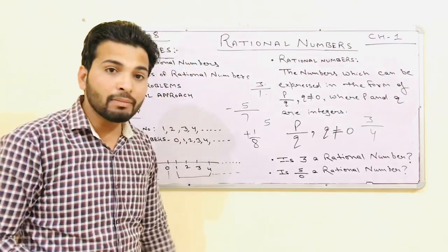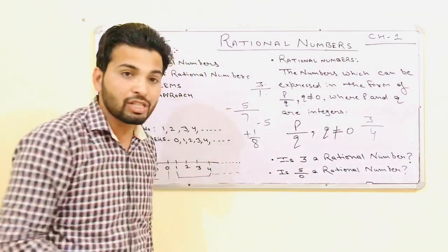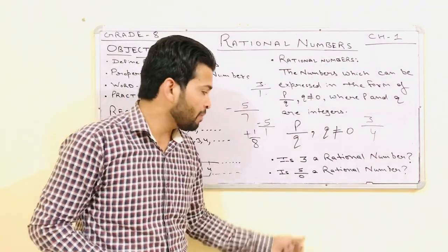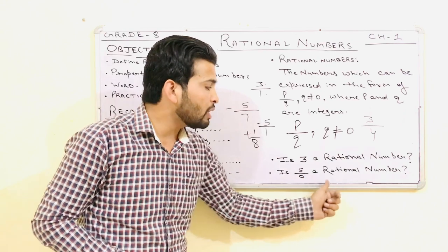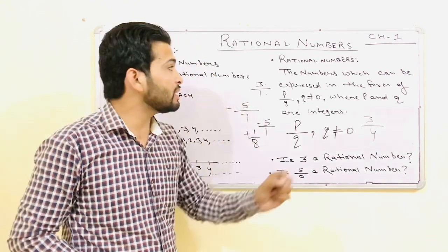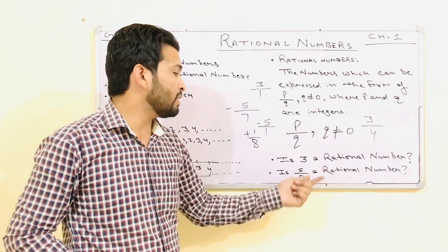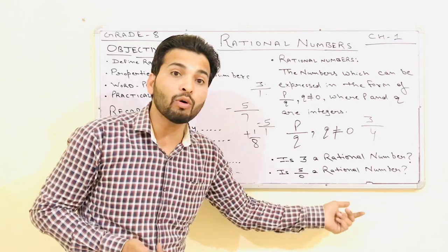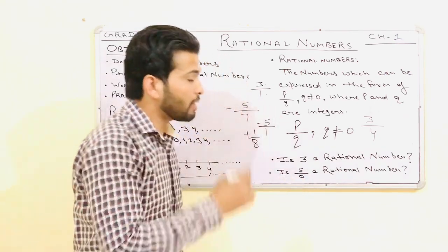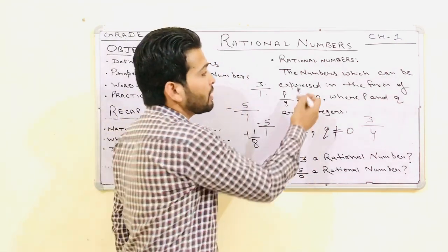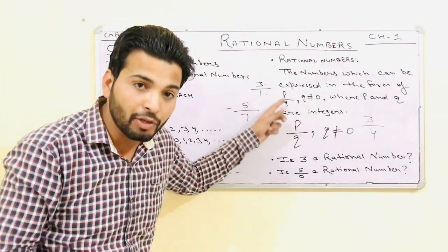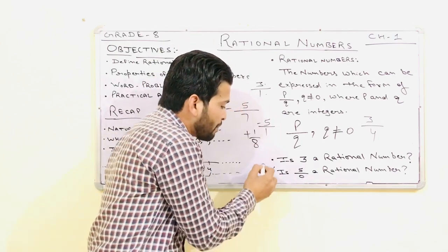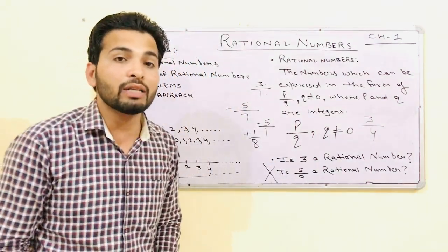Is 5 a rational number? Yes. Is minus 5 a rational number? Yes. My last question of this introduction: is 5 upon 0 a rational number? If you have learned the definition properly, you will answer in seconds. Obviously no — because Q is 0, and in the definition Q should not be equal to 0. So 5 upon 0 is not a rational number.